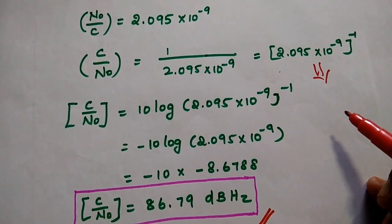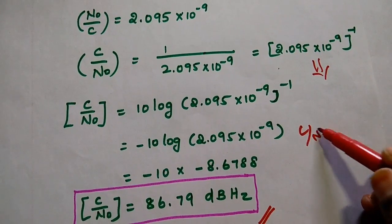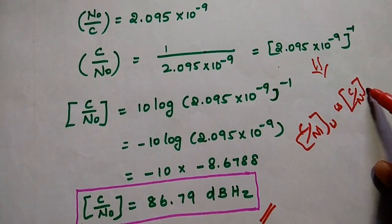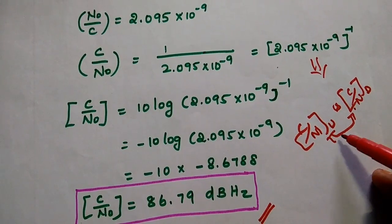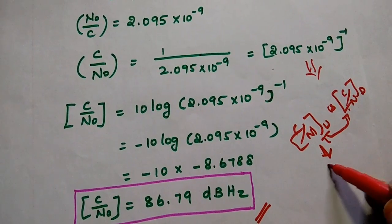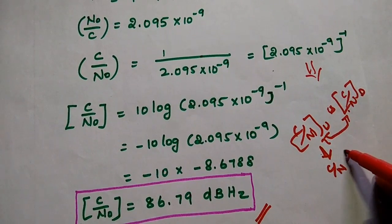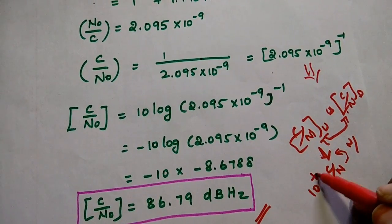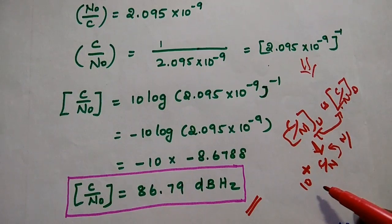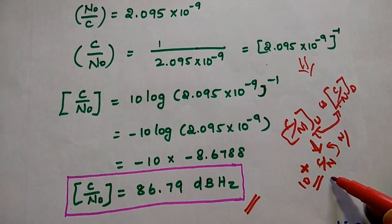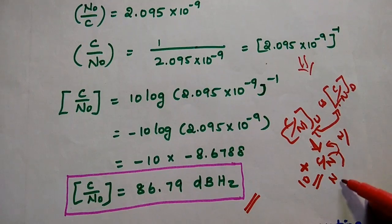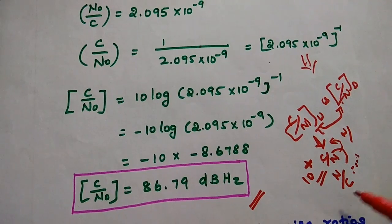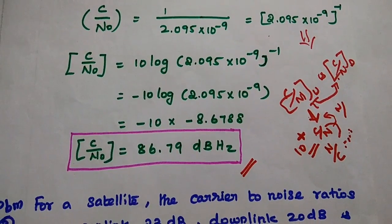The C/N ratios for uplink and downlink are given directly, but we should not add these two dB values directly. We must convert to the normal linear ratio without dB and then invert to N/C — because the C/N value is 10 to a positive power, which is a very large number and harder to work with. Expressing it as N/C gives 10 to a negative power, making the calculation more convenient.